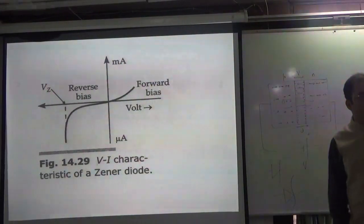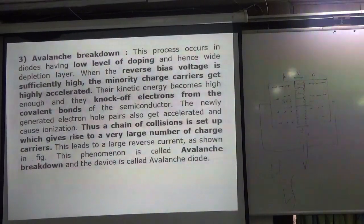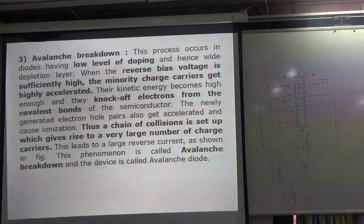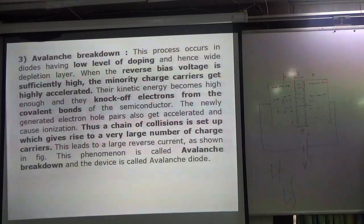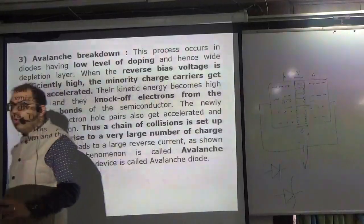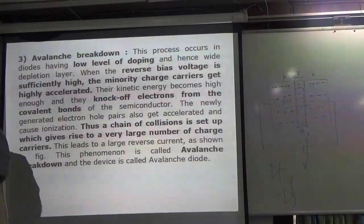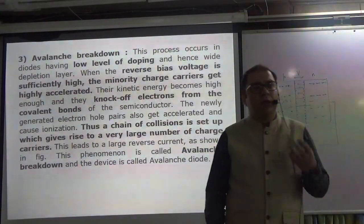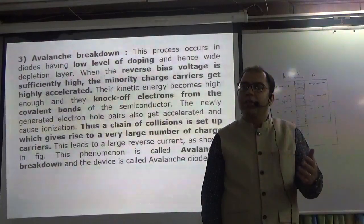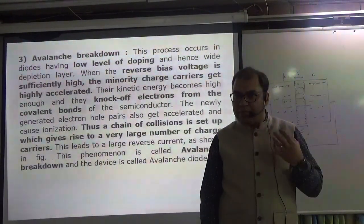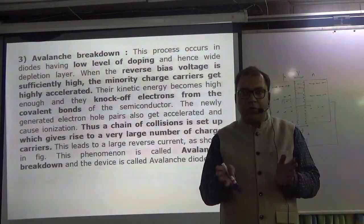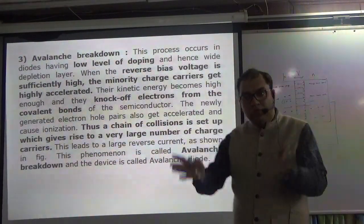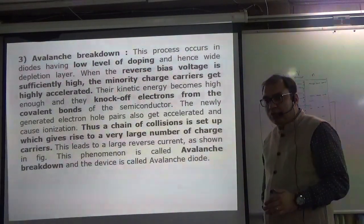There is one other breakdown which happens in reverse biasing — the Zener breakdown has been explained. Now there is another breakdown where the level of doping is low. In low doping there is less chance to break down by the Zener mechanism. This other breakdown is called avalanche breakdown. Think of an avalanche — a little drop of snow combines with more snow and starts to grow bigger and bigger, like a chain reaction.